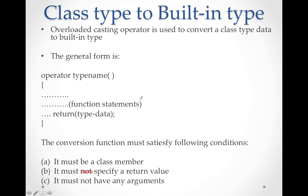The conversion function must satisfy the following conditions: it must be a class member, it must specify a return type (return value mentioned), and it must not have any arguments — the parameter list should be blank. These are the three rules to satisfy for class-type to built-in type conversion.